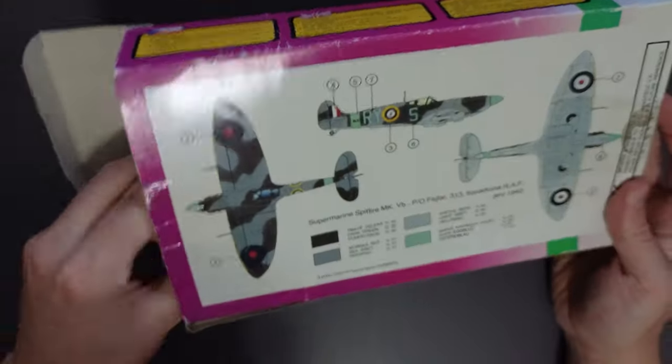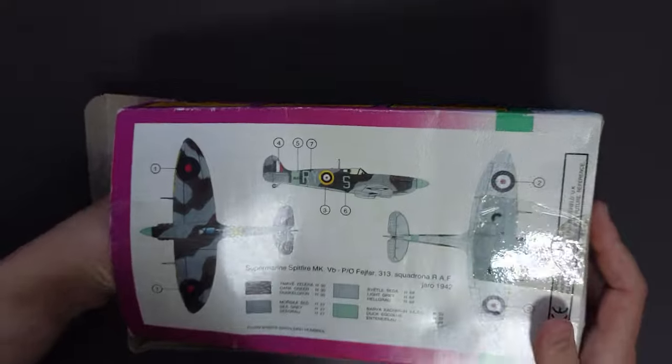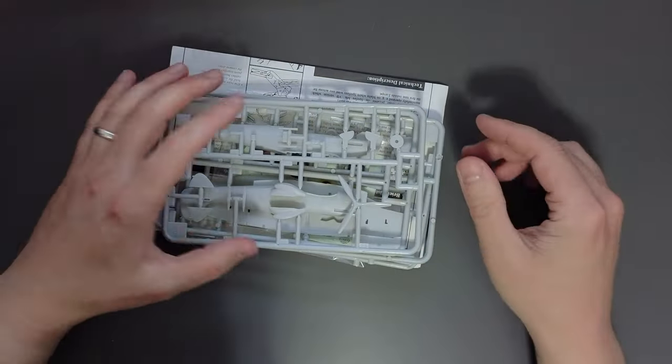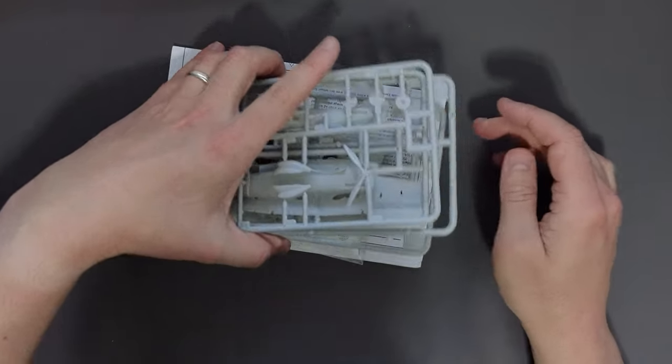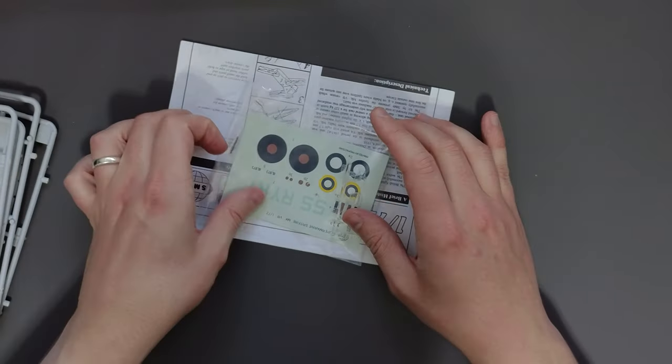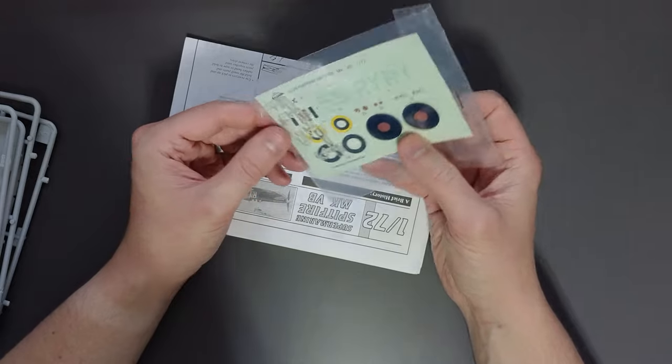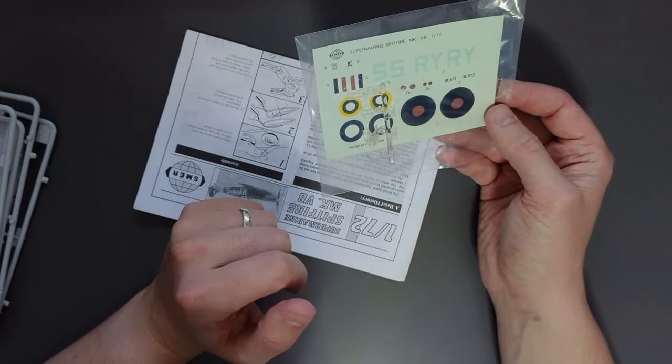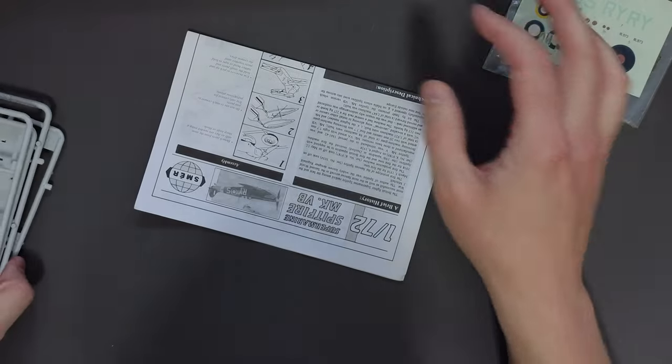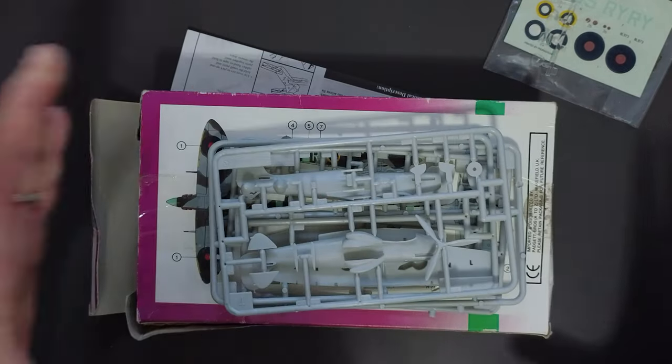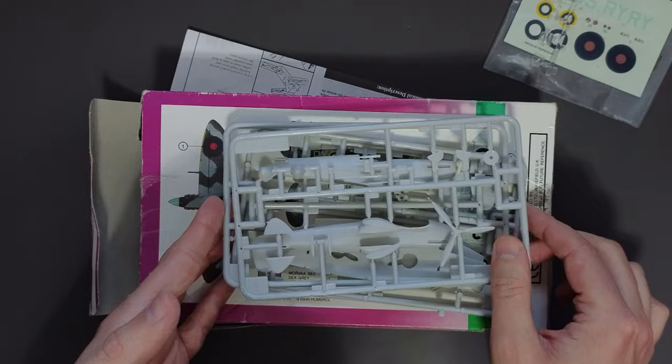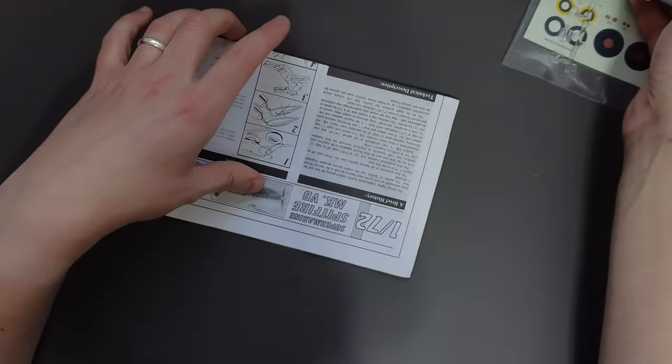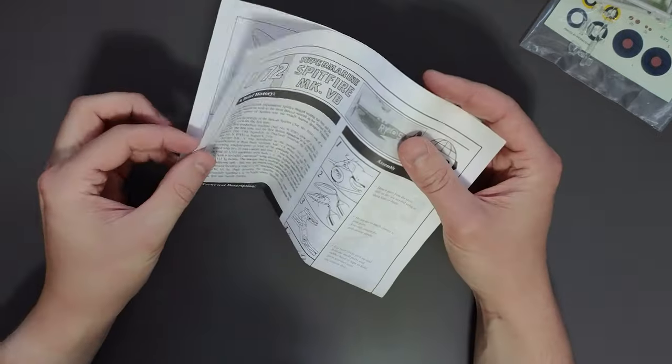So yeah let's have a look inside the box. The box is falling apart ever so slightly and everything is loose. Nothing is contained in a bag so if there was a bag once upon a time it's gone now. Apart from the transfers and the clear parts which are in a bag. So possibly that's how it originally came in the box. Not my favourite way of doing things because you can see that they don't fit and there is space for them to roll around and fall apart. But it is what it is. So let's look at the instructions.